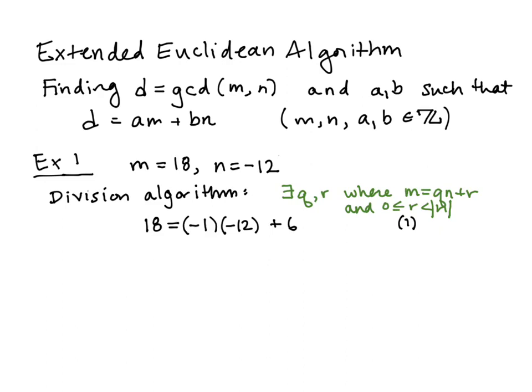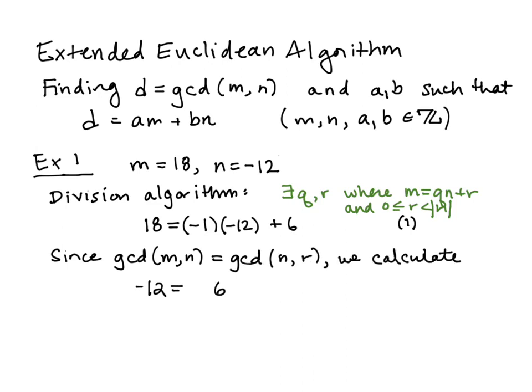When we have a zero remainder, we say that our integer divides the other integer. Since we don't have a zero remainder, we're going to use the fact that the GCD of m and n is equal to the GCD of n and r. So here we're going to calculate a new q and a new r to write negative 12 as a multiple of six plus a remainder. Either you've seen the proof that GCD(m,n) equals GCD(n,r) or you've completed that as homework — it is true, so in this video we'll just take it as a previously proven result.